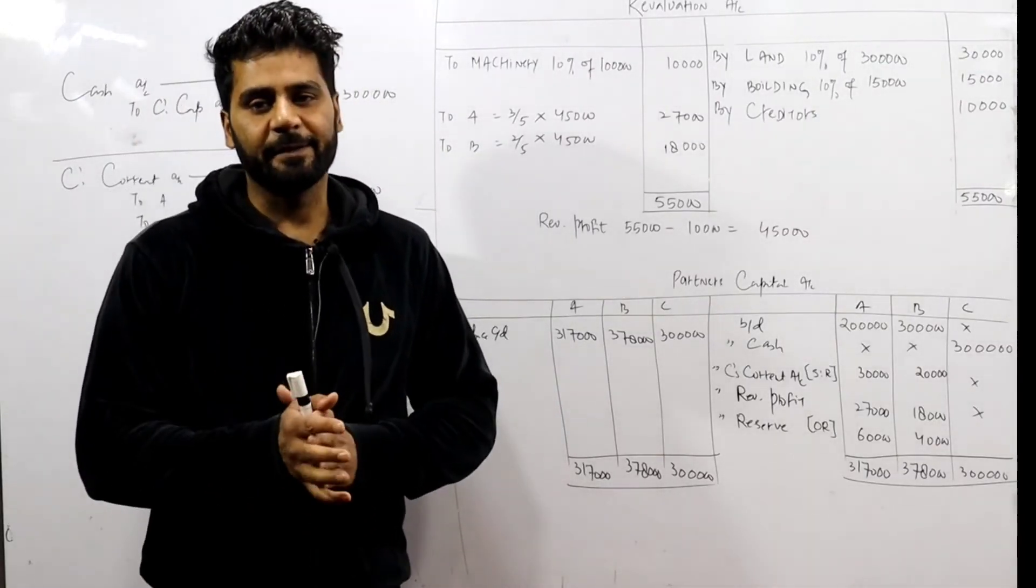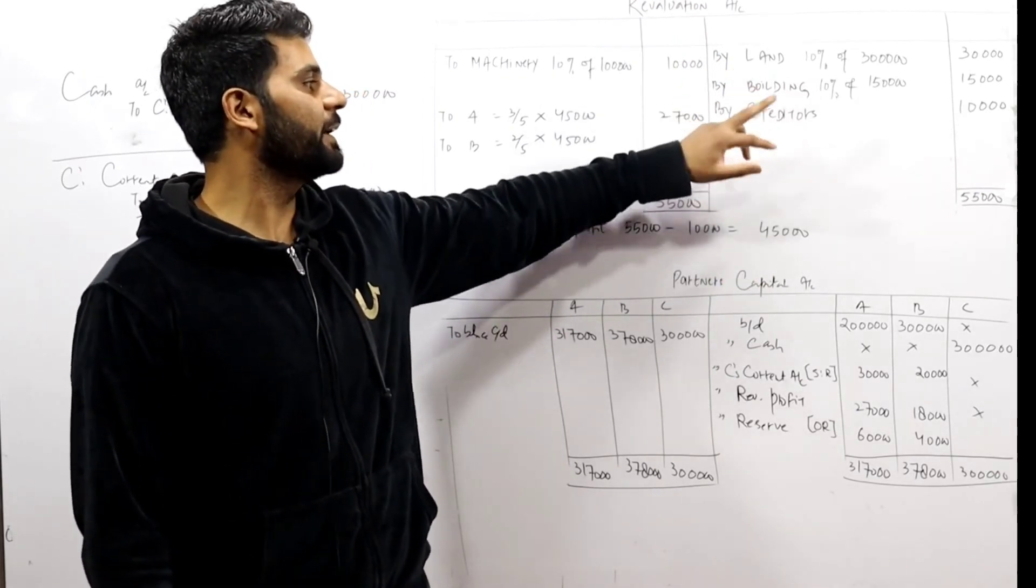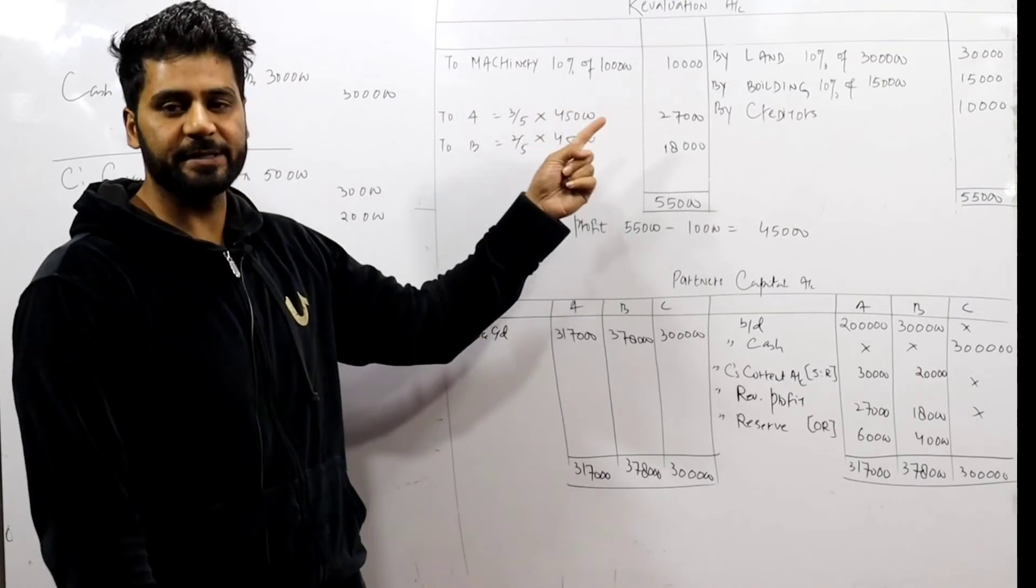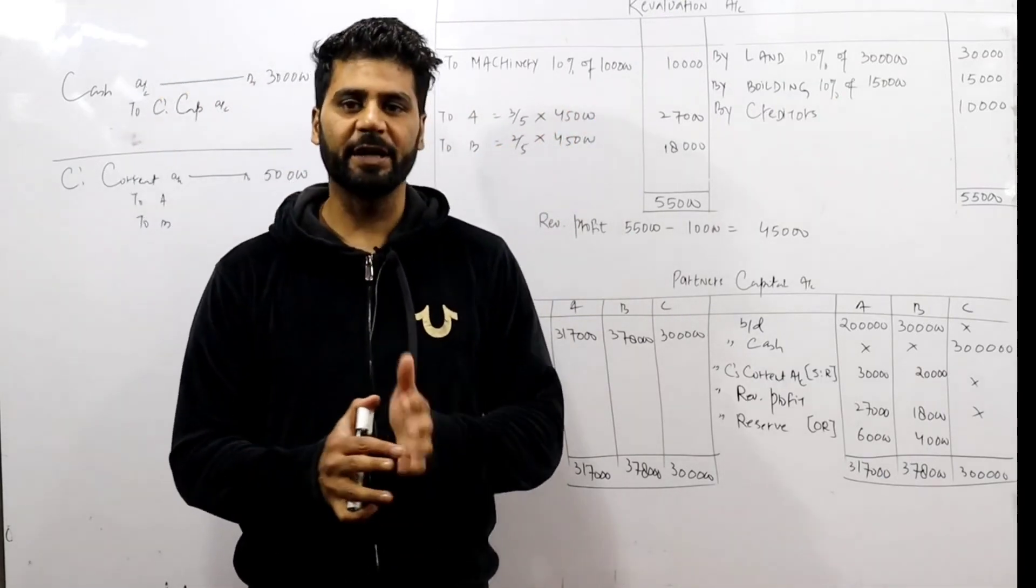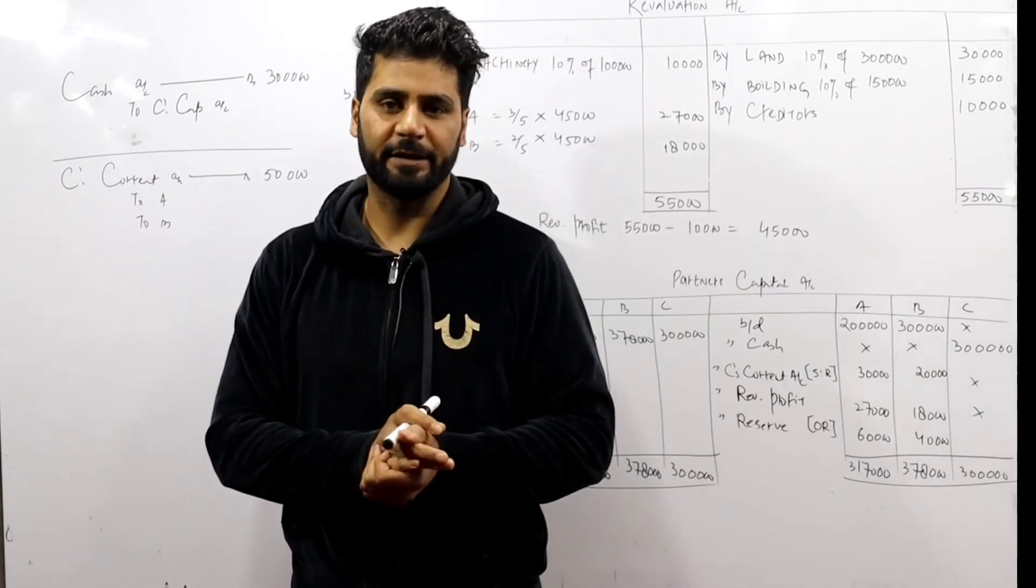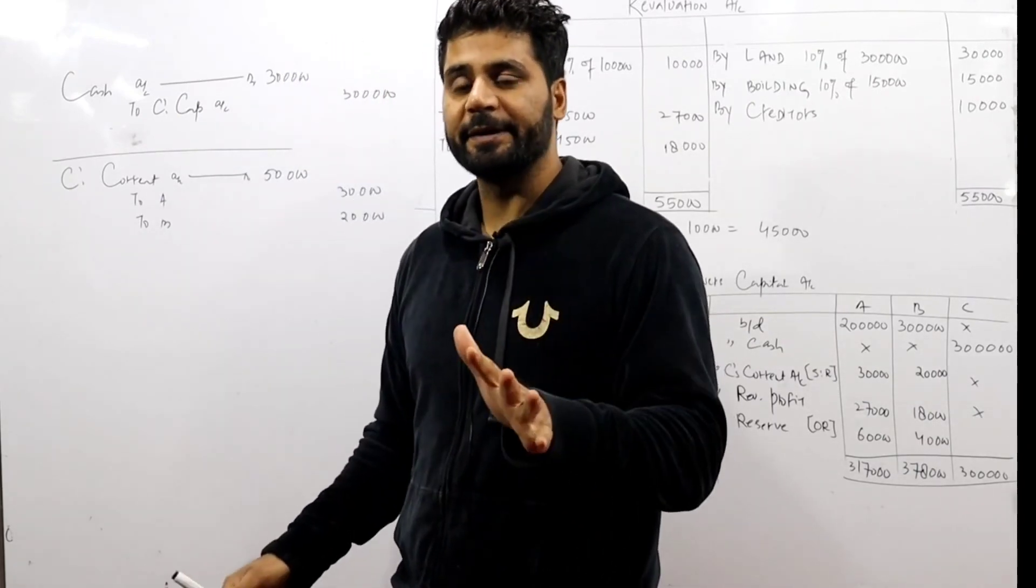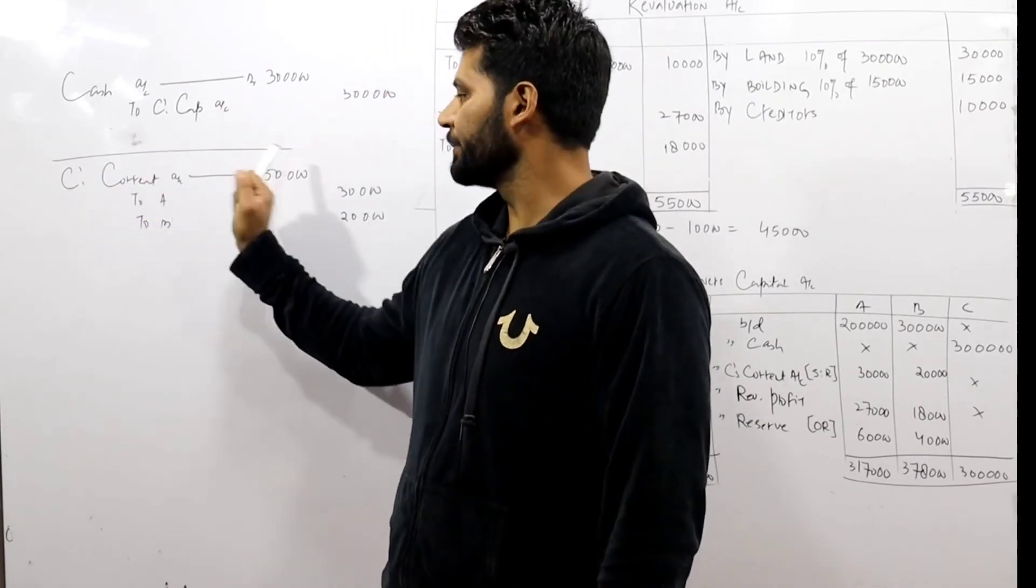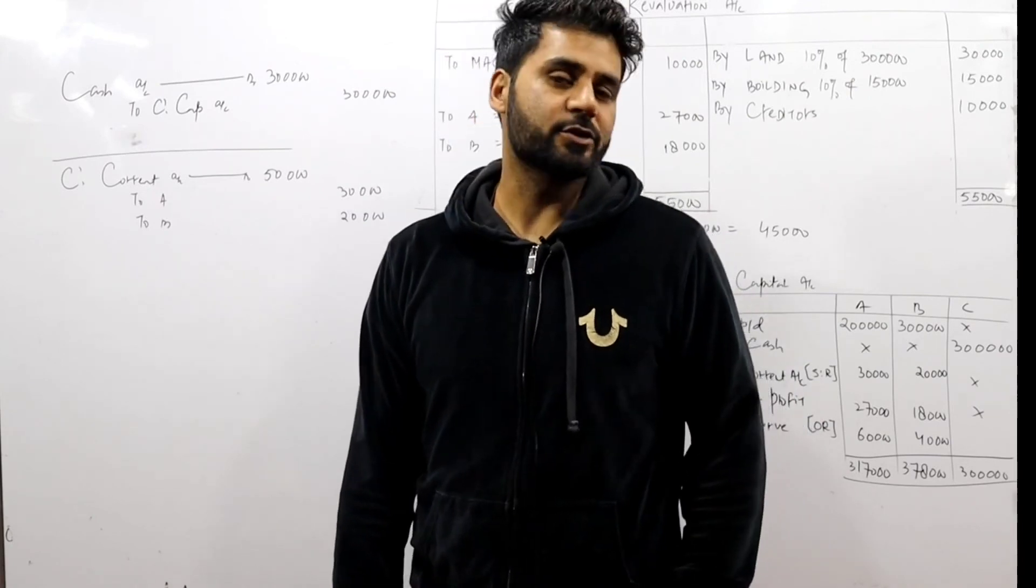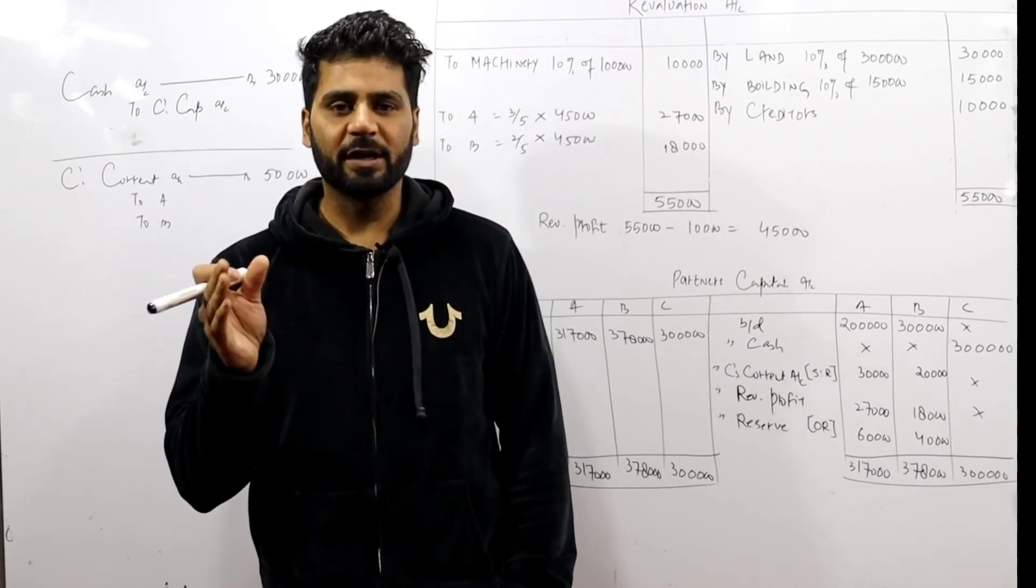Journal entries: revaluation account debit to machinery, creditors account debit, land account debit, building account debit to revaluation. Then there is profit, revaluation account debit to A's capital, to B's capital. After that capital account entry, cash account debit to C's capital. Premium is not there because premium is not brought. So entry will be C's current account debit to A, to B. Reserve entries. Just keep these things. Try this assignment before you see the next video.